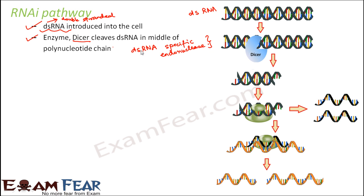Dicer is an endonuclease, not an exonuclease, so it cuts from within the nucleic acid strand. It acts similarly to DNA scissors or restriction endonuclease enzymes — it is a cutting enzyme, but it is very specific to double-stranded RNA structure. Here you can see the Dicer going to cut the dsRNA from between.